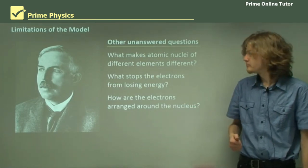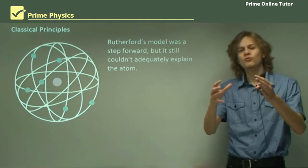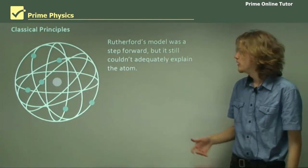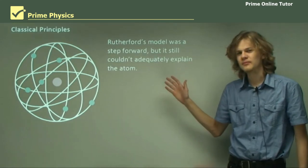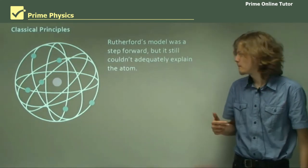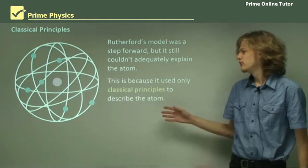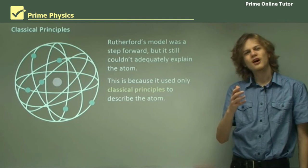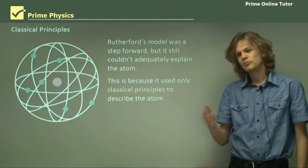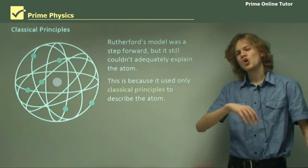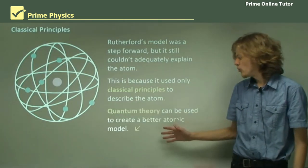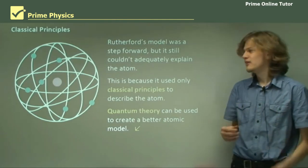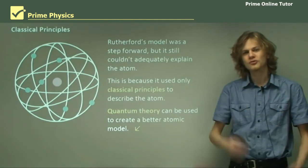So, it wasn't a perfect model. Rutherford's model was a step forward. It was a big step forward over the Plum Pudding model, because it's more similar to our current model than JJ Thompson's model. But it still couldn't explain the atom adequately. It was missing details. This is because it used classical principles to describe the atoms, things like continuous energy loss and that sort of thing. But classical physics aren't the only sort of physics that we've learned about. If you remember back in From Ideas to Implementation, you would have remembered a little bit about quantum physics. In fact, quantum theory can be used to create an atomic model that describes the way atoms behave better than Rutherford's classical model, which had orbiting electrons.